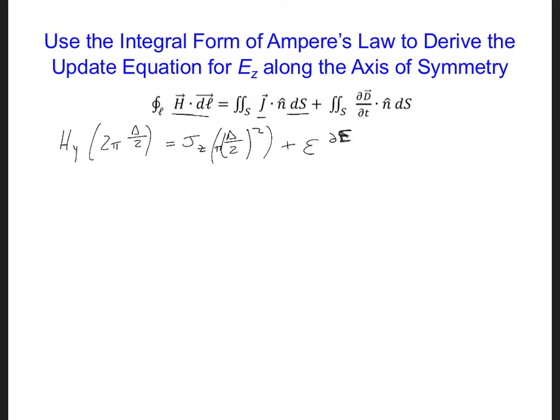Plus epsilon DE. I'm writing this in terms of the electric field, and that's going to be the electric field in the Z direction, DT, times pi R squared again.